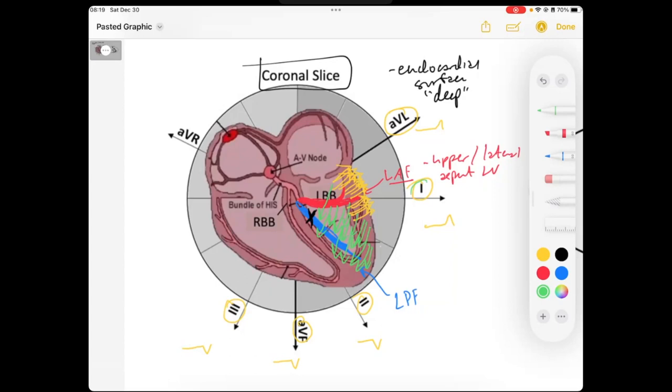Well, we look at our lateral leads, lead 1, AVL. These signals are going away from those leads. And this is a strong signal. So we're going to get deep S waves as a part of our QRS.